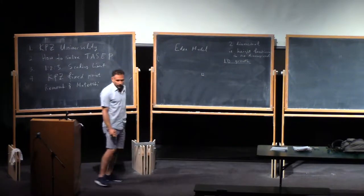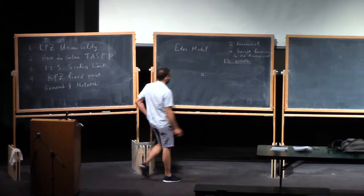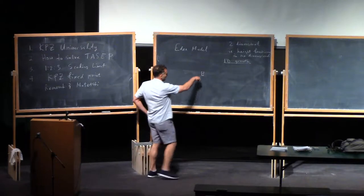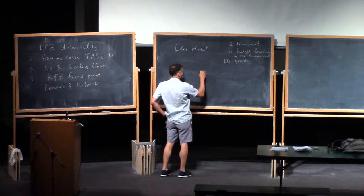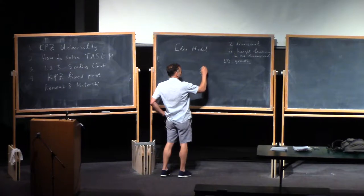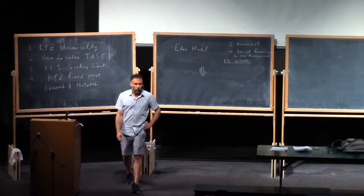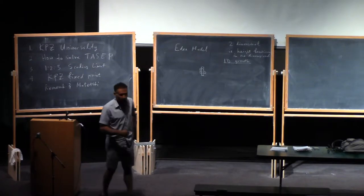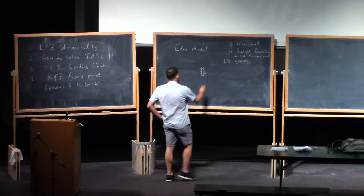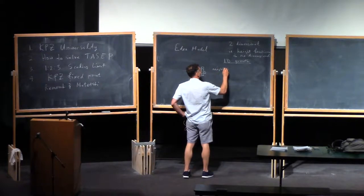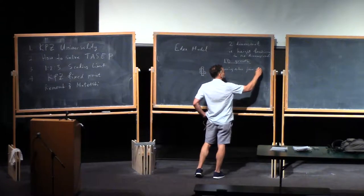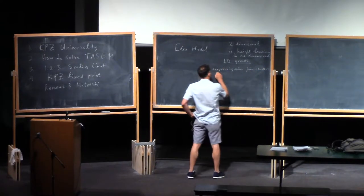We start with the origin occupied and then choose a neighbor at random. In the next step, you choose one of the new neighbors at random, et cetera. Or maybe we add sites at rate one — so every neighboring site gets joined onto the cluster at rate one. Neighboring sites join the cluster at rate one.